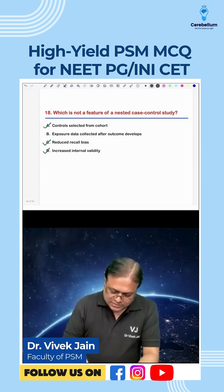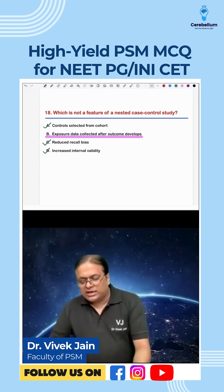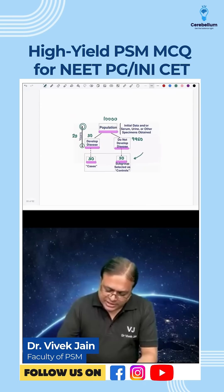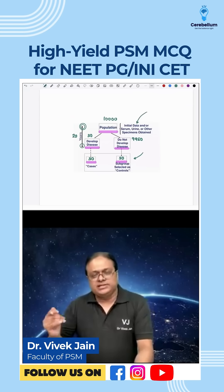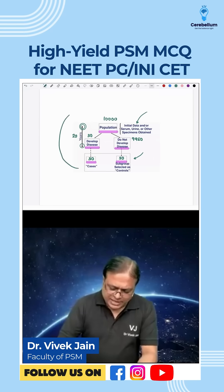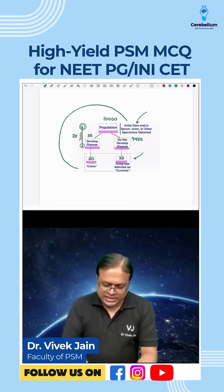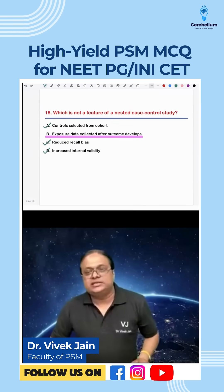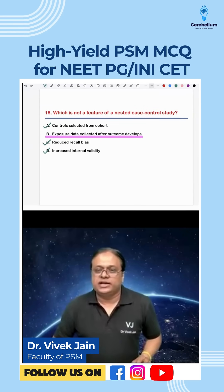So the answer — the feature that is NOT present — is that exposure data is not collected after the outcome develops. Exposure data is collected at the start. When the disease occurs, we come back and check that earlier collected data. So data is collected at the start and analyzed later when the new rare disease develops.